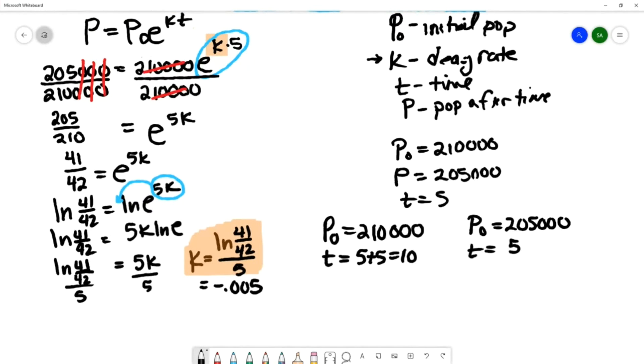We're going to substitute these values of time, the initial population, and the value of k that we just found into our model.